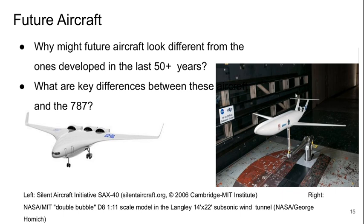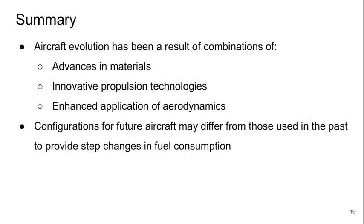Overall, the D-8 is a more advanced design in that it has actually been tested and is closer to something that could be built. A key takeaway is that compared to a 737 at similar performance, this aircraft is predicted to burn about 70% less fuel. To summarize, aircraft evolution has been a result of combinations of advances in materials, innovative propulsion technologies, and enhanced applications of aerodynamics. The configuration for future aircraft may well differ significantly from those used in the past in order to provide a step change in fuel consumption.